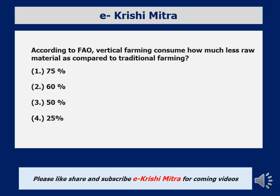Third question: according to FAO, vertical farming consumes how much less raw material compared to traditional farming? Options are 75%, 60%, 50%, and 25%. In vertical farming, cultivation is done in pots, stacks, or multi-story structures in cities. The roots do not touch open field soil; only nutrient media is provided. Therefore, input use is less, and the answer is 75% less input is used.